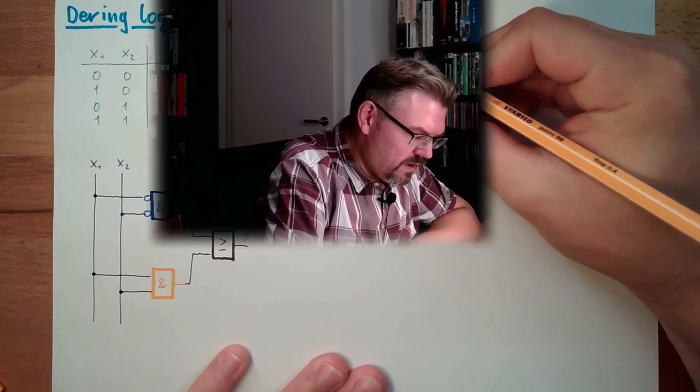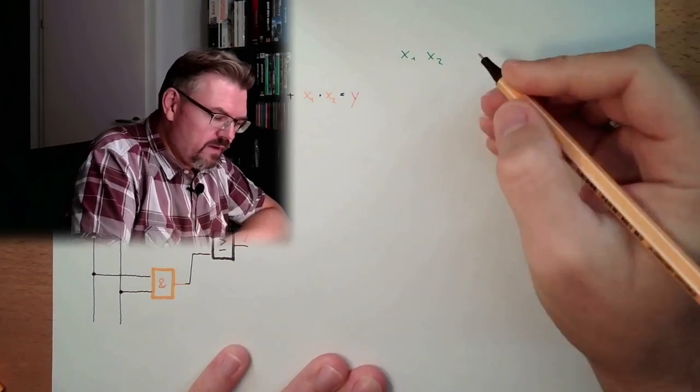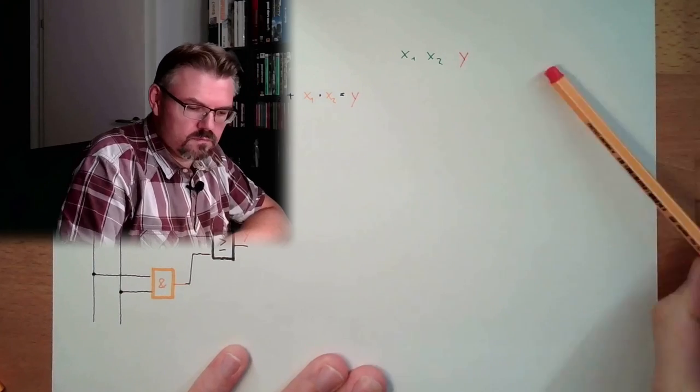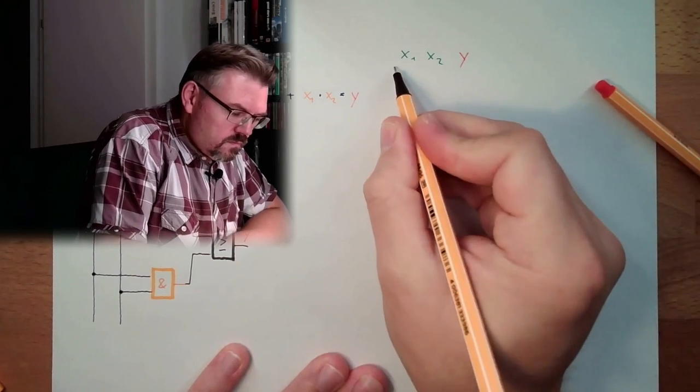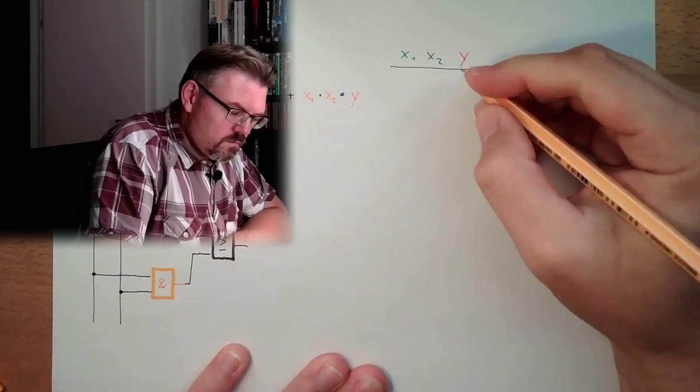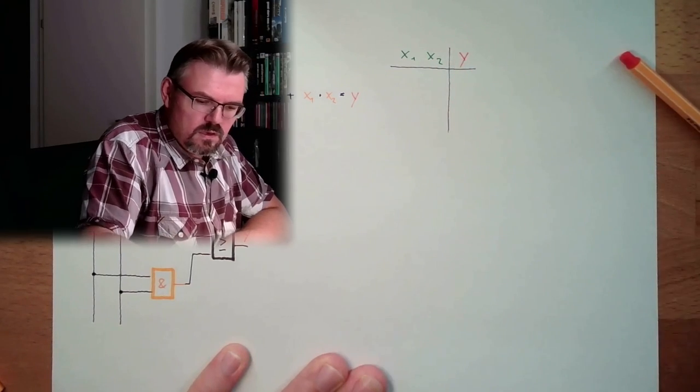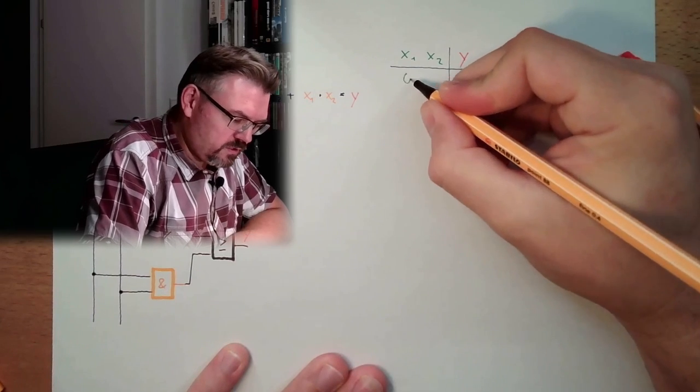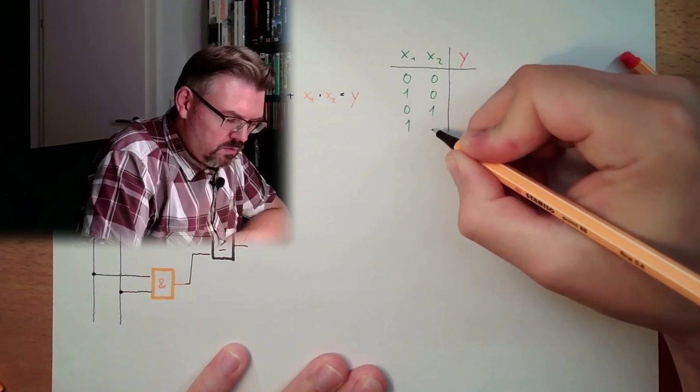If we have here another Table of Truth also with two inputs. So we have x1 again. We have x2 again. We have y again. Let's note all possible combinations. 0, 1, 0, 1, 0, 1, 0, 0, 1, 1.